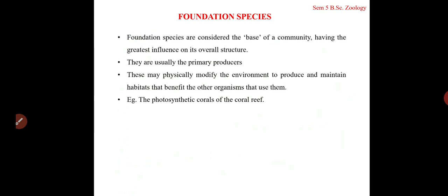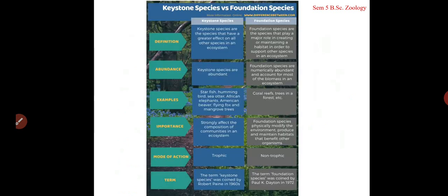Keystone species are a very important species in a community — when removed, they negatively affect the rest of the community composition. Keystone species needn't be present in abundance; their numbers may be less, but they have a very important role in the maintenance of community structure. Usually in a terrestrial ecosystem, it is predators that form the keystone species.